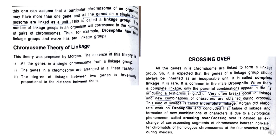Sometimes breaks occur in linkage and new combinations of characters are obtained during crosses — this kind of linkage is called incomplete linkage. Morgan concluded that failure of linkage and formation of new combinations of characters is due to crossing over, which is a cytological phenomenon. Crossing over is defined as exchange of gene segments of chromosomes between non-sister chromatids of homologous chromosomes at the four-stranded stage of meiosis.